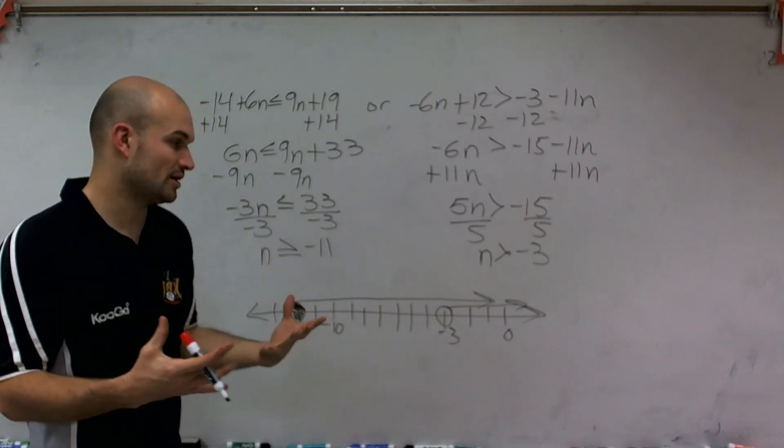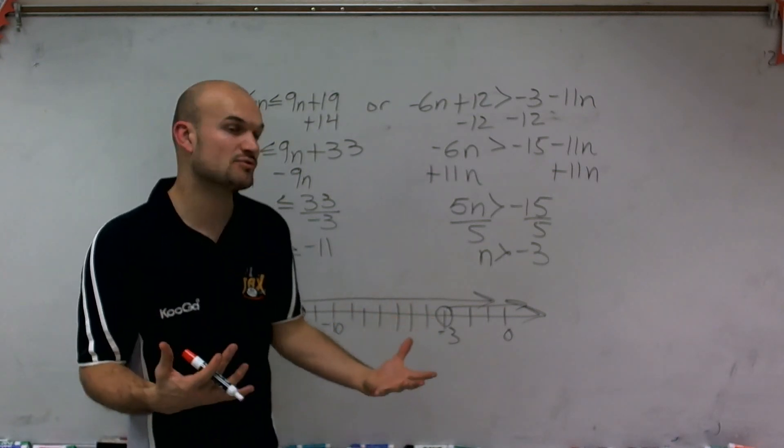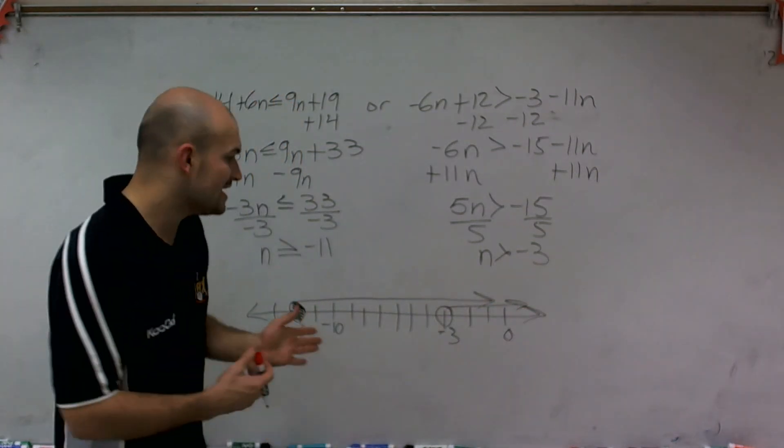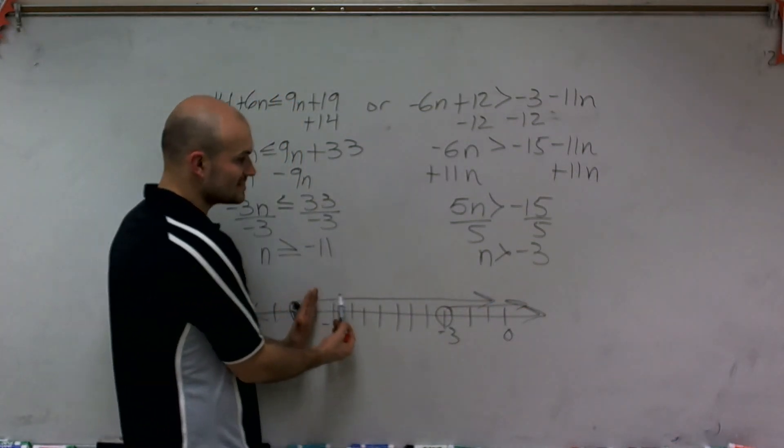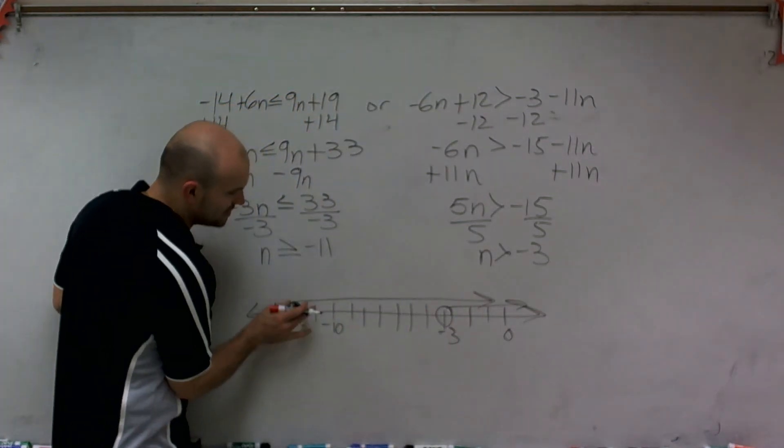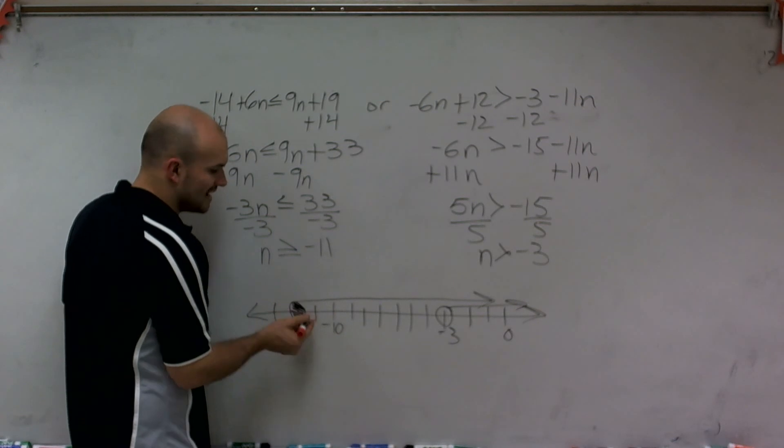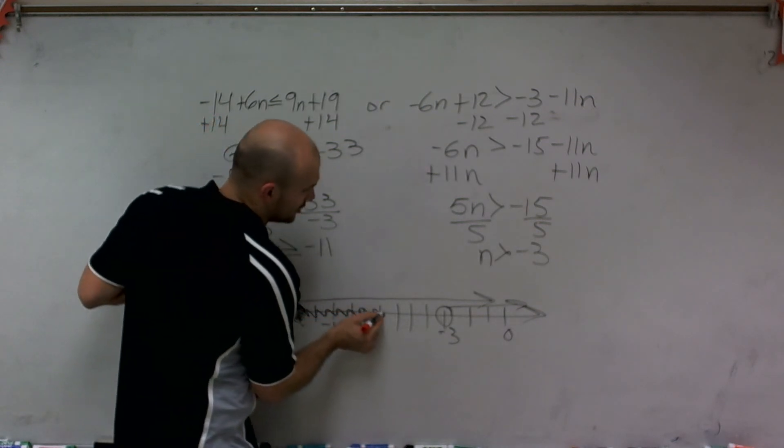If this was an and inequality, then the only part where our equations would be true would be where they intersect. But since it's an or statement, it just has to be in and true for this statement or this statement. So therefore, we notice that it's true for both one or the other statements, starting at negative 11 and going all the way here.